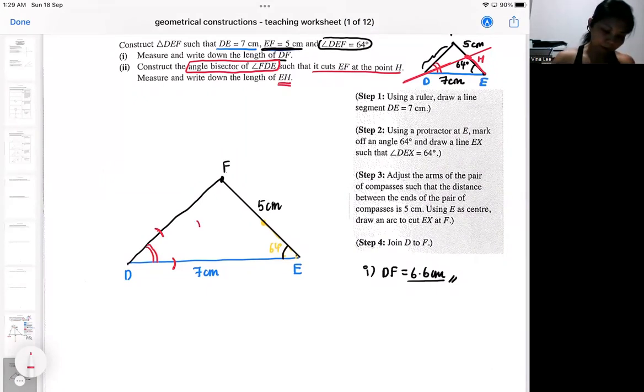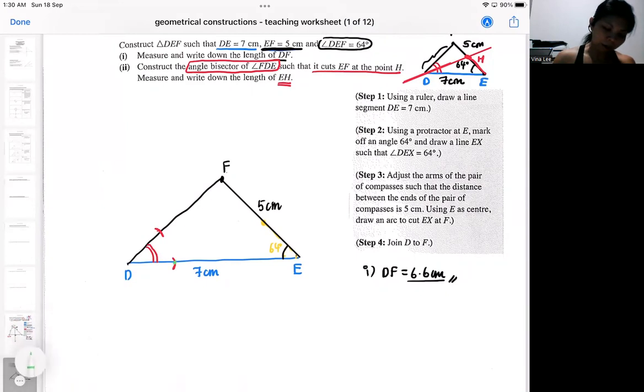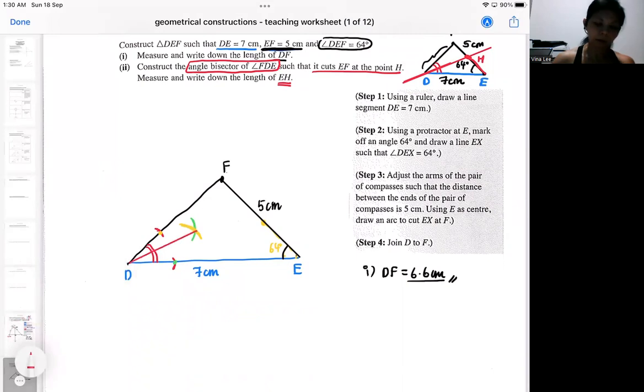Then you put your sharp edge here. So you will get an arc here. You put your sharp edge here. You will also get your arc here. I think that's sufficient. Then from here, you join them. So that will be your angle bisector.